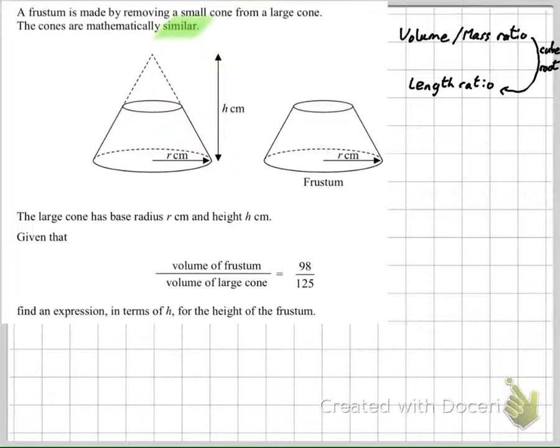But that will be the ratio between the large cone's volume and the small cone's volume. But look, this information here isn't about the large and the small cone, but the frustum's volume and the large cone's volume. So how can we change this relationship here to tell us something about the relationship between the two cones, rather than the frustum and the big cone?